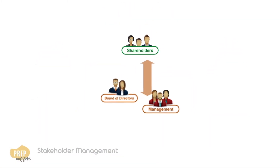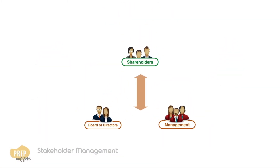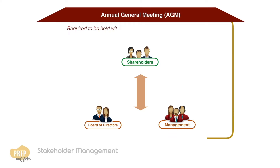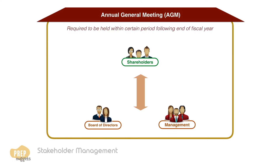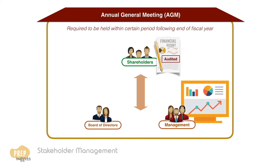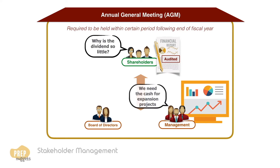With respect to shareholder relationship, general meetings are standard practice. Companies are generally required to hold an annual general meeting within a certain period following the end of their fiscal year. At the AGM, the management provides shareholders with the audited financial statements for the year, addresses the company's performance and significant actions over the period, and answers shareholder questions.